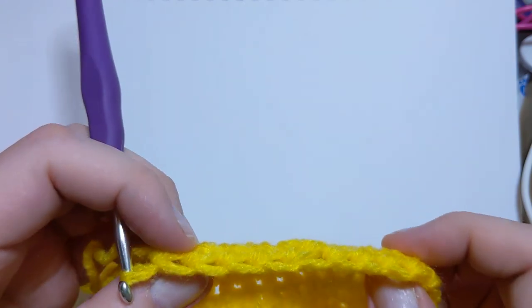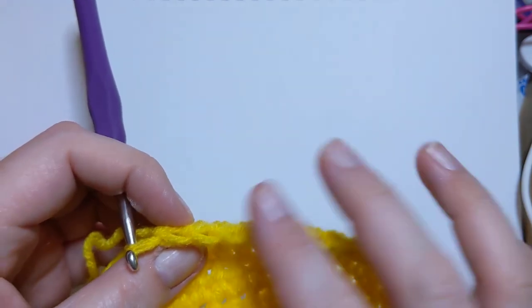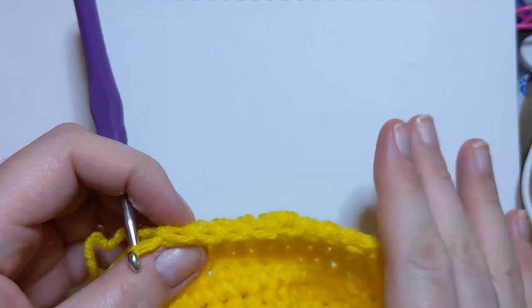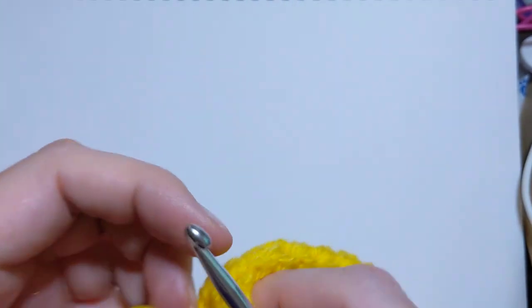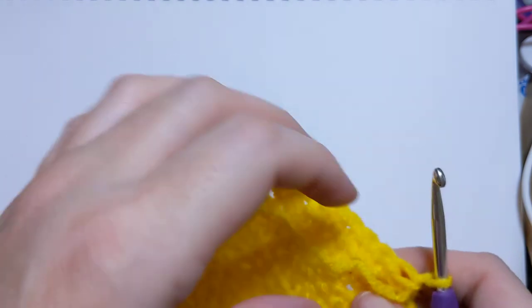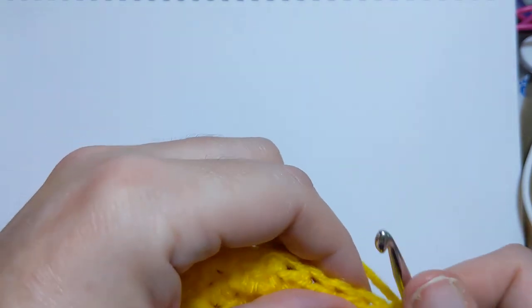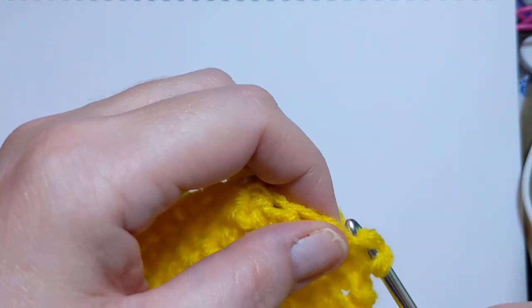And we are going to keep nine stitches from here on out. No more increases. No more decreases. Easy peasy. All the way up. I'm going to turn my work. And just do some half doubles.